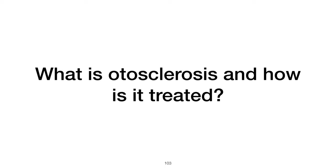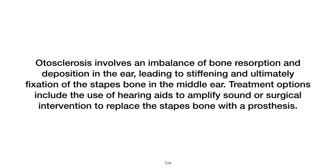What is otosclerosis and how is it treated? Otosclerosis involves an imbalance of bone resorption and deposition in the ear, leading to stiffening and ultimately fixation of the stapes bone in the middle ear. Treatment options include hearing aids to amplify sound or surgical intervention to replace the stapes bone with a prosthesis.